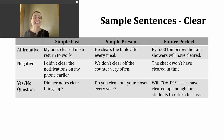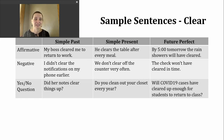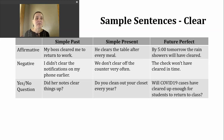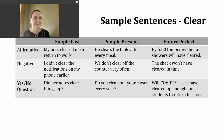If I want to make a negative sentence in the simple past tense, I'm going to use "did not" and then the base verb — no -ed in negative sentences. Here's an example: "I didn't clear the notifications on my phone earlier." For a yes-or-no question in the simple past, I start with "did," then the subject, then the base verb. For example: "Did her notes clear things up?" — another way to ask, "Did that help explain things?"